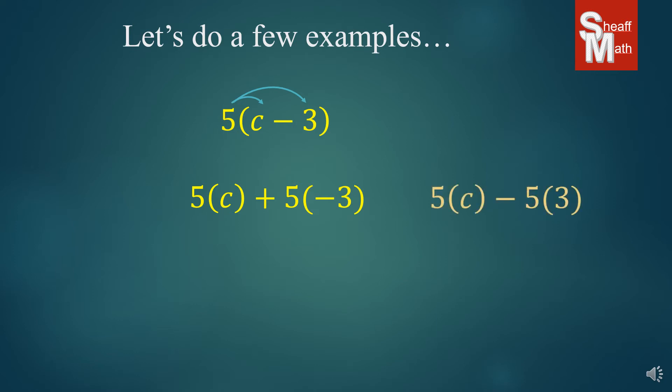You want to stay away from doing something like this where you have the minus and then you multiply the 5 times 3. It will get confusing for you later on. So you want to stick with the yellow answer. So we simplify and we get 5c minus 15 which is our answer.